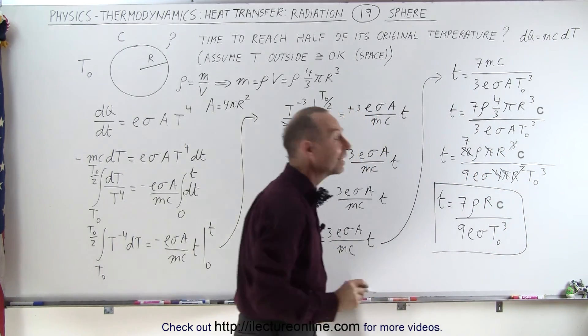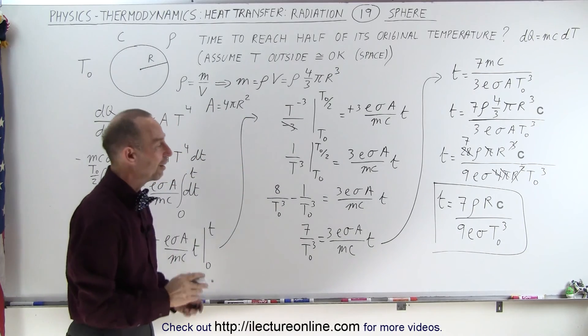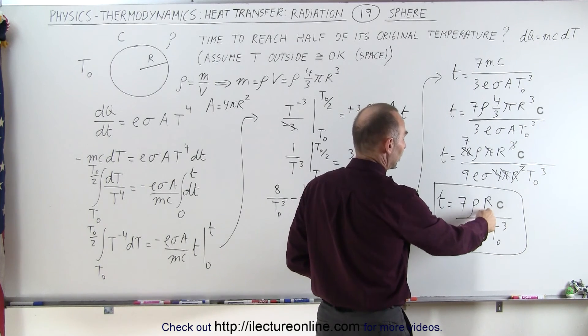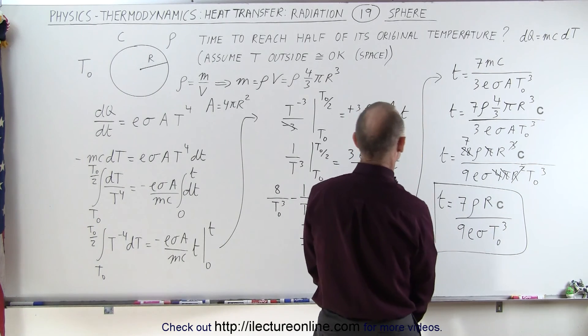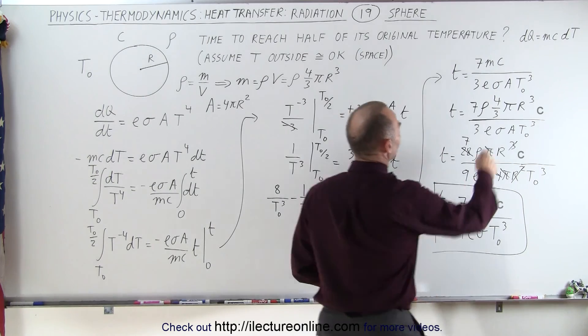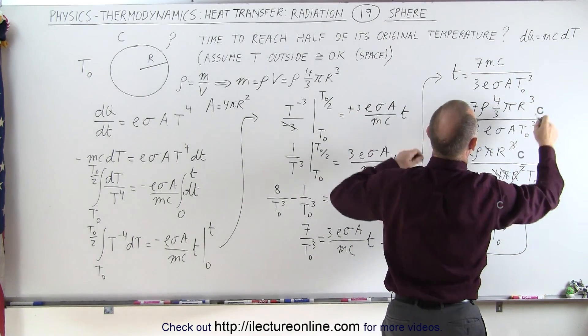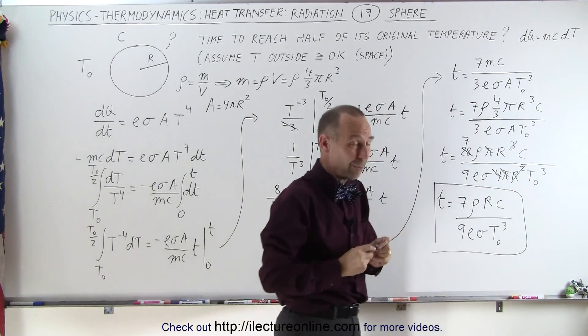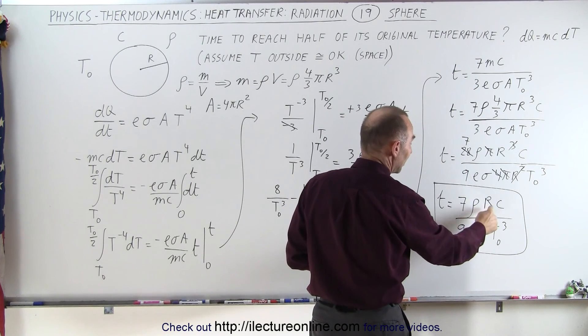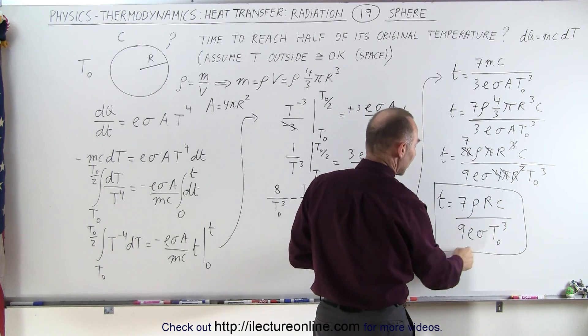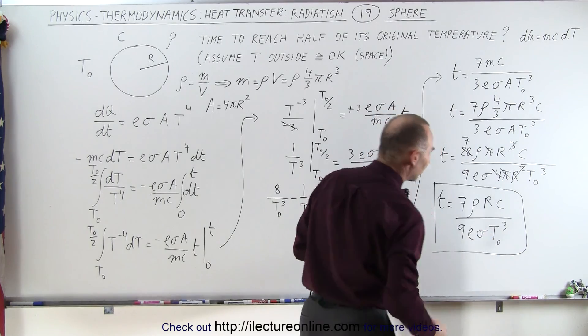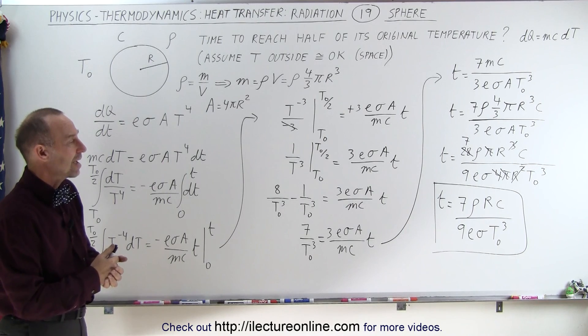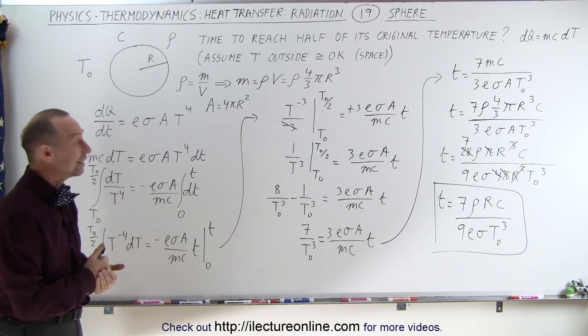This is the time that it takes to get to half of its original temperature. Now, of course, if you know what the density of the sphere is, you know r. And am I missing something? Seems like I'm missing a c somewhere. There's a c here. I'm missing a c. Because without the c we won't be able to see how much heat it can retain. So the density times r times c and epsilon sigma and the initial temperature. Plug all that in. You can actually calculate the time that it takes to reach half of its original temperature. And that's how it's done.